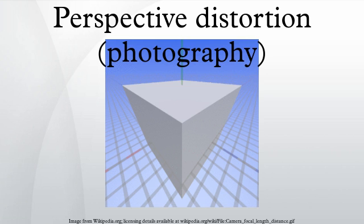Note that linear perspective changes are caused by distance, not by the lens per se. Two shots of the same scene from the same distance will exhibit identical perspective geometry, regardless of lens used.